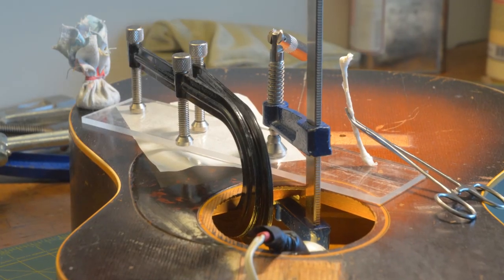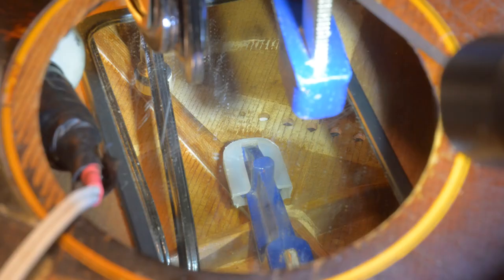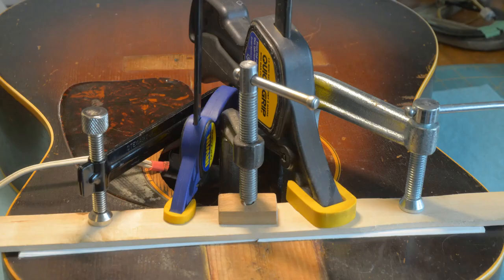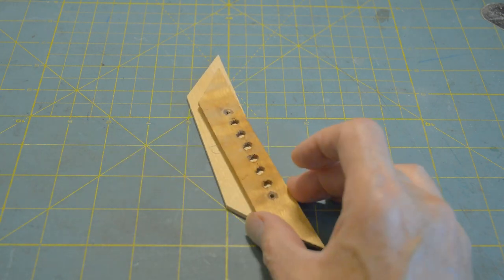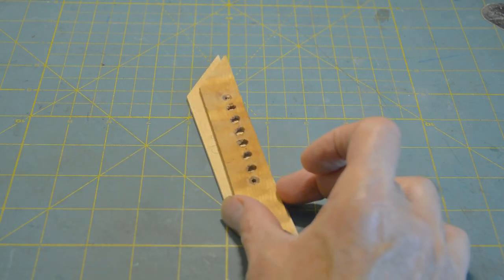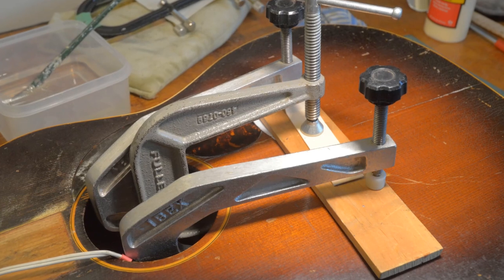The main X brace being glued here. And a look on the inside too. This is the main upper brace being glued. To keep the area of the bridge more stable, I decided to make the new bridge plate a bit wider. And there it is clamped.